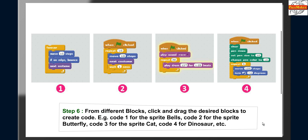Step 6: from different blocks, click and drag the desired blocks to create code. For example, Code 1 for Sprite Bells, Code 2 for Sprite Butterfly, Code 3 for Sprite Cat, Code 4 for Dinosaur, etc.